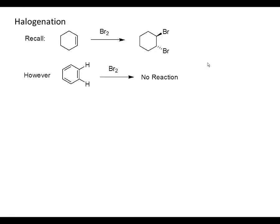Let's look at some of the specific reactions. First, we'll look at halogenation. Recall that alkenes, like cyclohexene, react with bromine to do a nice trans addition of bromine in this reaction.